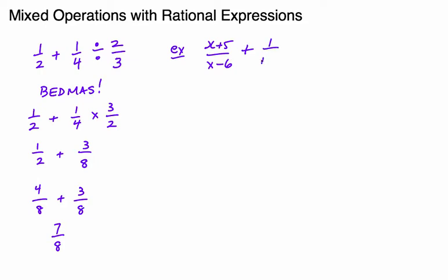We have to do the exact same thing with our rational expressions that now contain algebra. So if I have (x + 5)/(x − 6) plus 1/(x − 4), divided by a fraction — notice I've set these questions up to look essentially the same: a fraction plus a fraction divided by a fraction. I have to do the same sort of steps: first deal with the division, get an answer, then do the adding and subtracting.